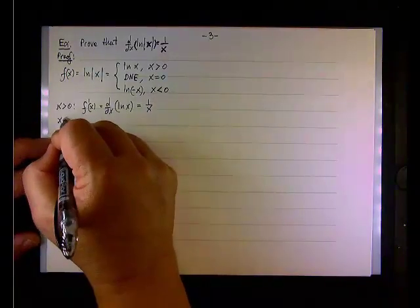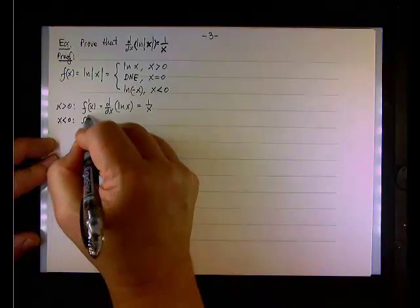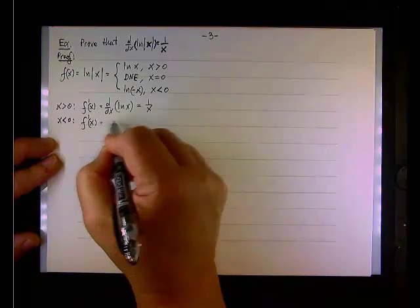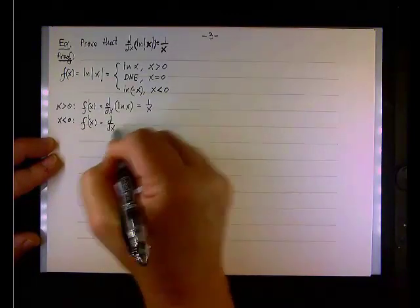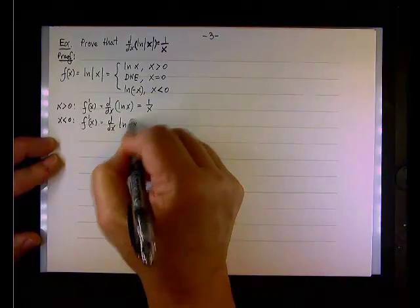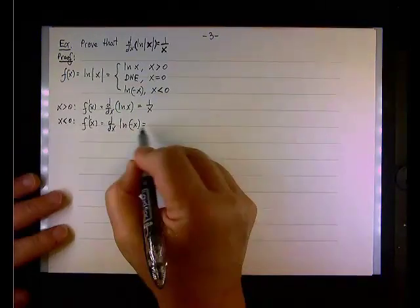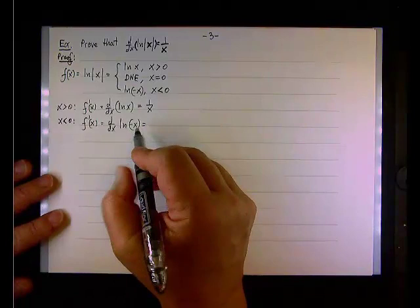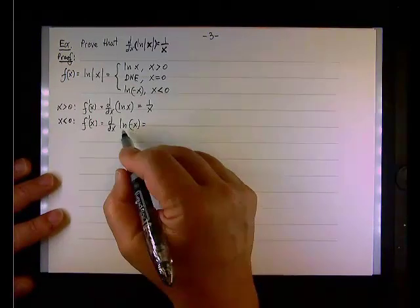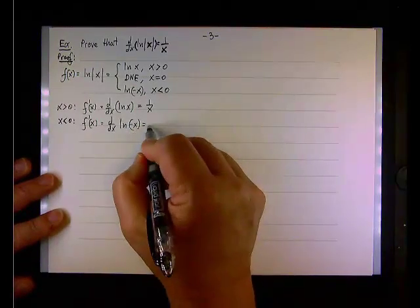But what about the negative part? Well, f prime of x, when x is negative, will be d/dx of natural log of negative x. So again, a little bit of chain rule here. If u is negative x, then the derivative of natural log of u is 1 over u.